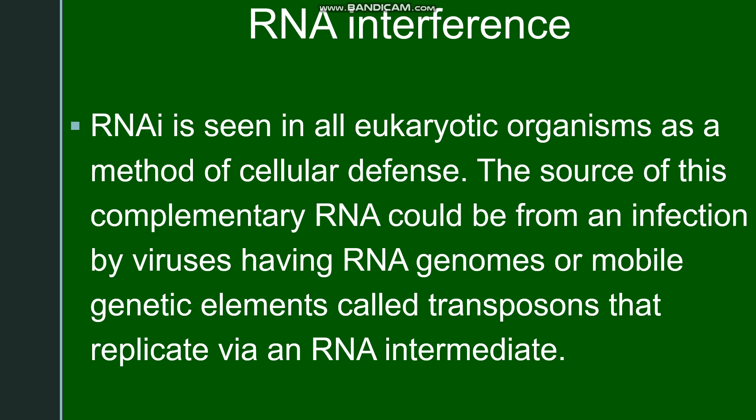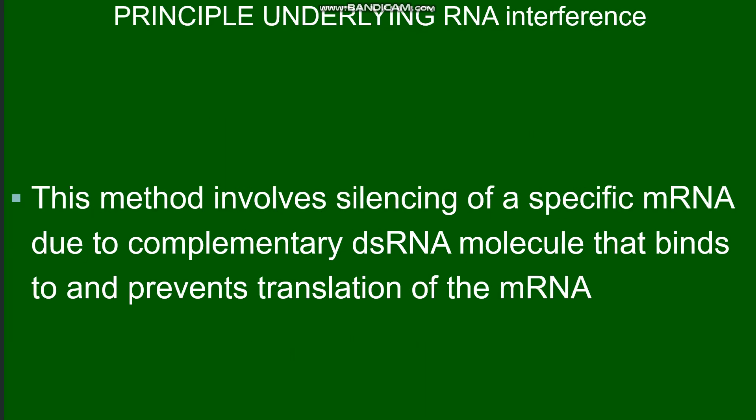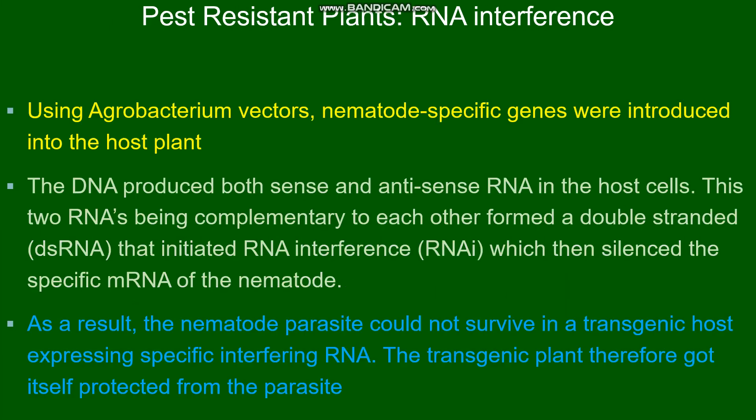Now let us see how RNAi protects tobacco plants from the nematode. The principle underlying RNA interference is that it involves silencing of a specific messenger RNA due to a complementary double-stranded RNA molecule that binds to and prevents translation of the messenger RNA.